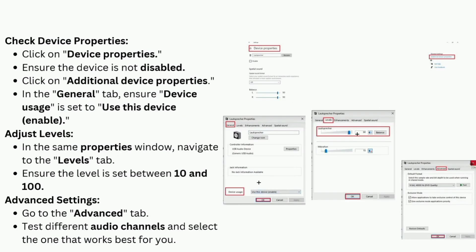Click on Device Properties and ensure the device is not disabled. Click on Additional Device Properties — in the General tab, ensure Device Usage is set to 'Use this device'. Navigate to the Levels tab and ensure the level is set between 10 and 100. In the Advanced tab, test different audio channels and select the one that works best for you.